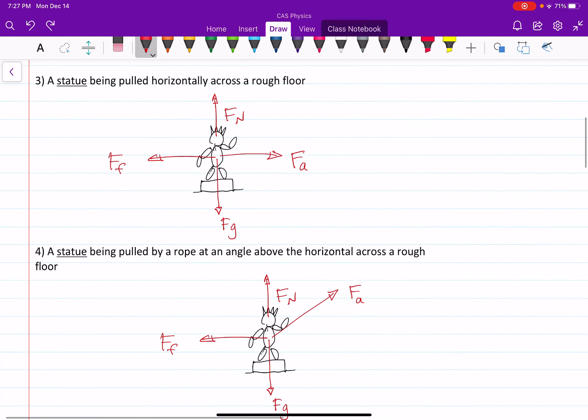In this case, a statue is being pulled horizontally across a rough floor. Whenever we say rough, we mean friction. It's got friction, so you can't ignore friction. So that's what we've drawn. We've drawn an applied force, a force of friction to the right and to the left, and then you've got your normal force and your gravitational force up and down.